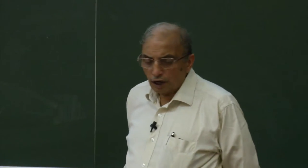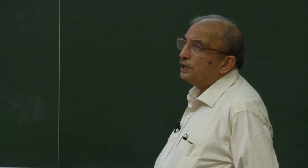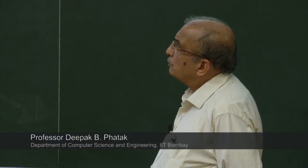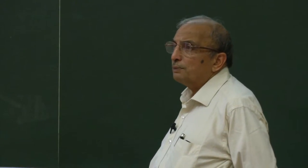The third question: for any recursion to terminate, the values of parameters — A: can change in any order; B: must move monotonically towards a termination case; C: must stay unchanged in all calls to the function; D: must never become negative. Which one is the right answer for the values of parameters to be modified such that the recursion terminates?